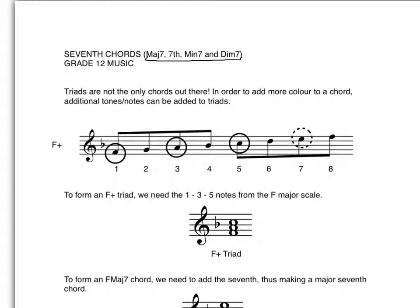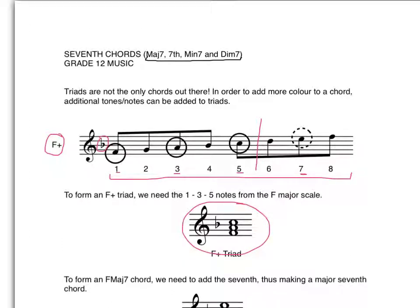We're going to use F major as a first example. F major has a B flat in its key center, so we make sure we write that out. Here's that scale. Until now we've stopped here - we've taken the first, third, and fifth notes as our triad notes. However, to do a seventh, we can even add the seventh note on top to form the F major triad.